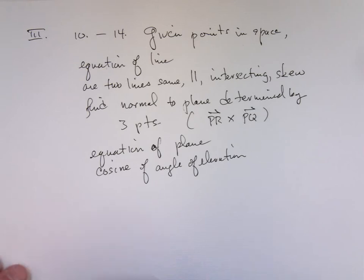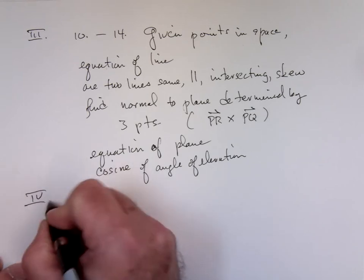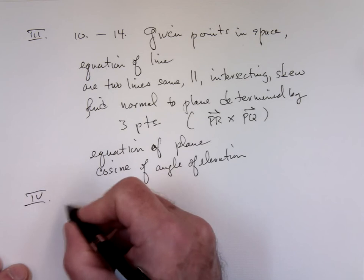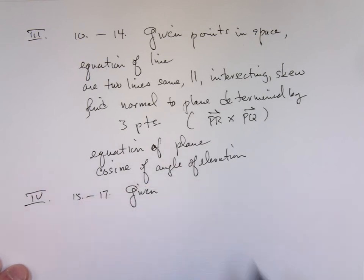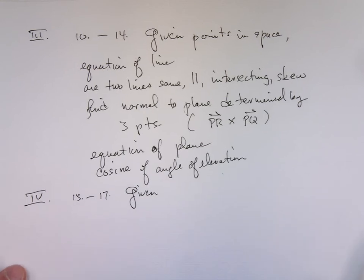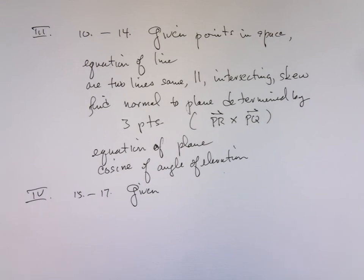And then 15 through 17 is I'm going to give you a surface. It's a difficult one. It's got four syllables, Ted. You may not have seen that before. Polysyllabic.